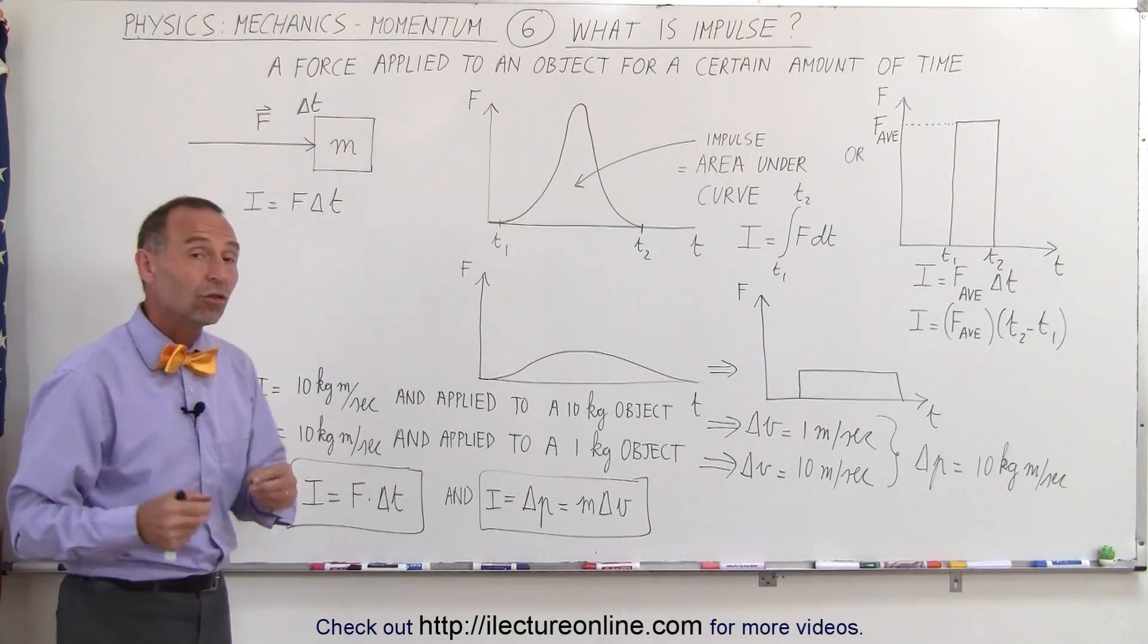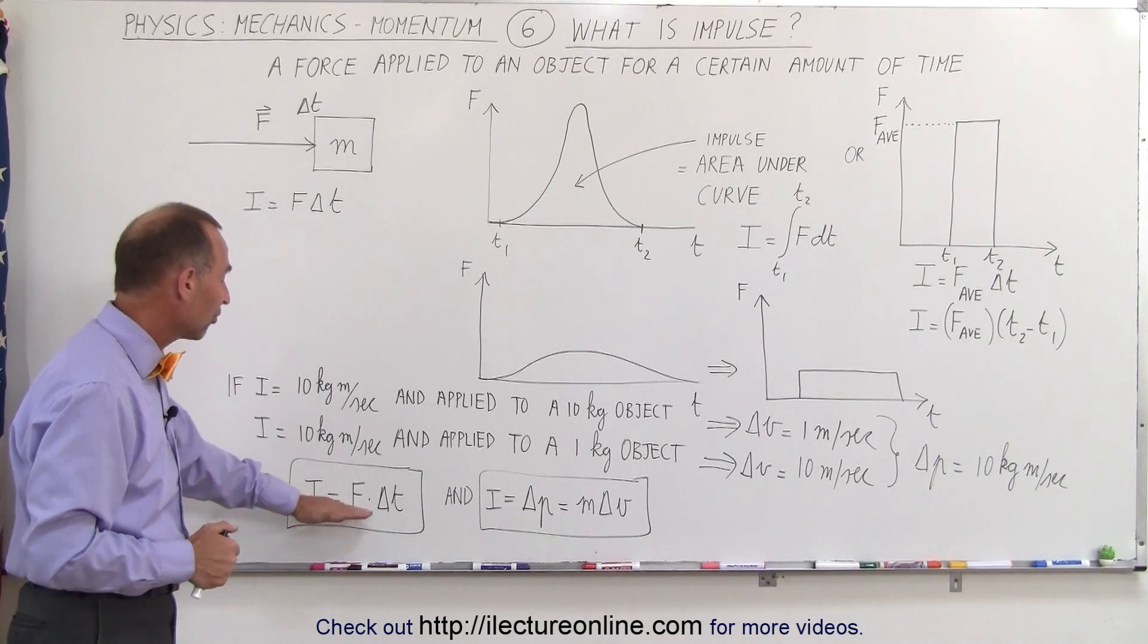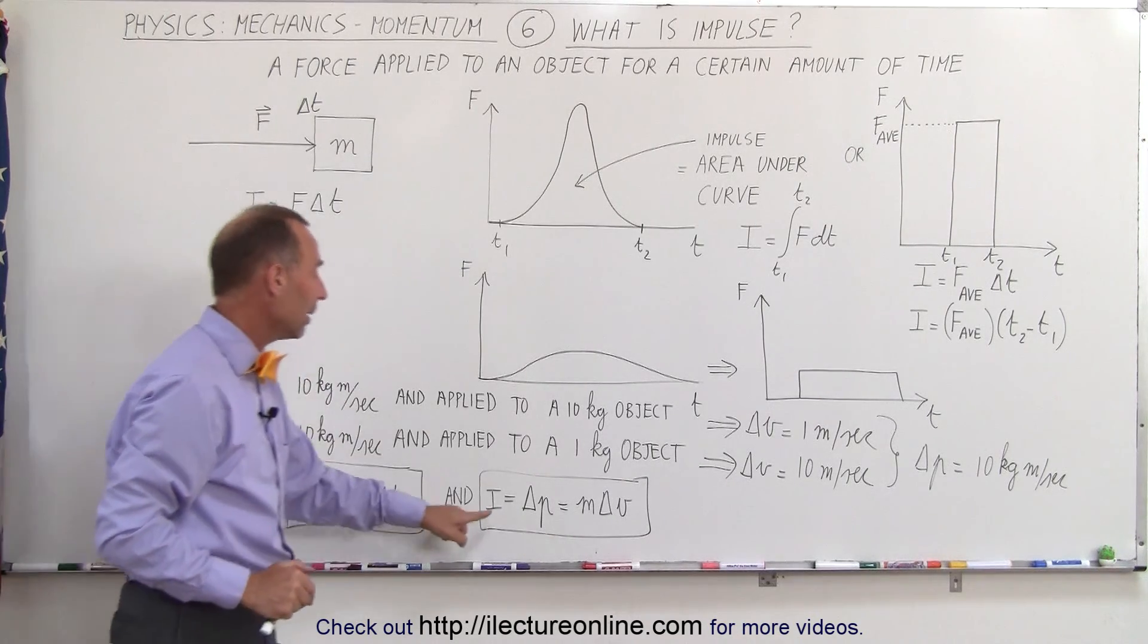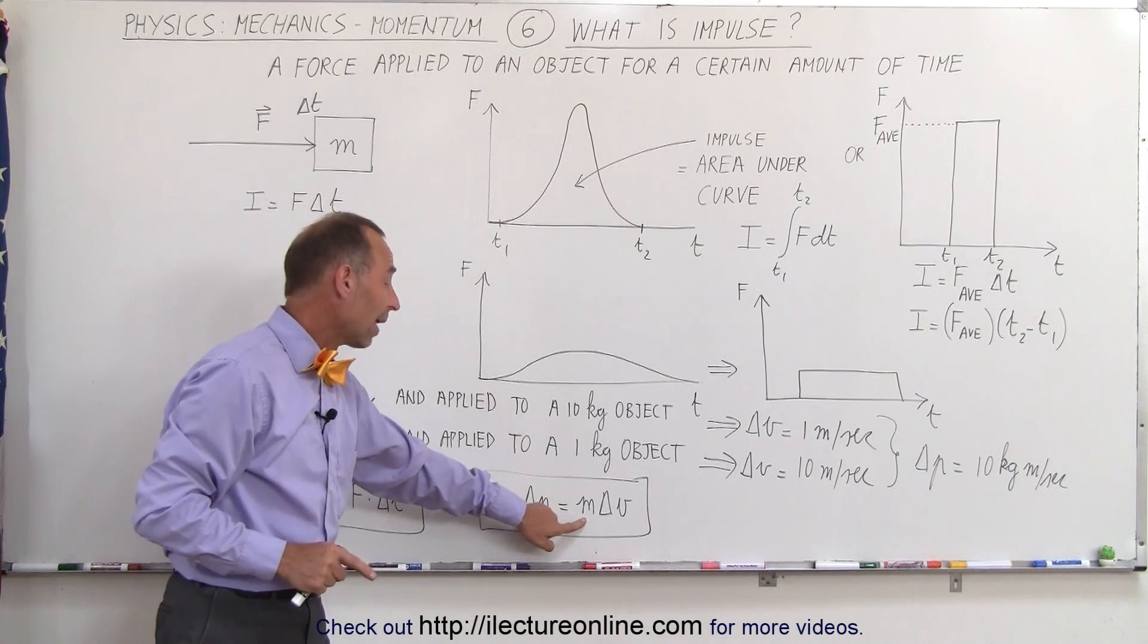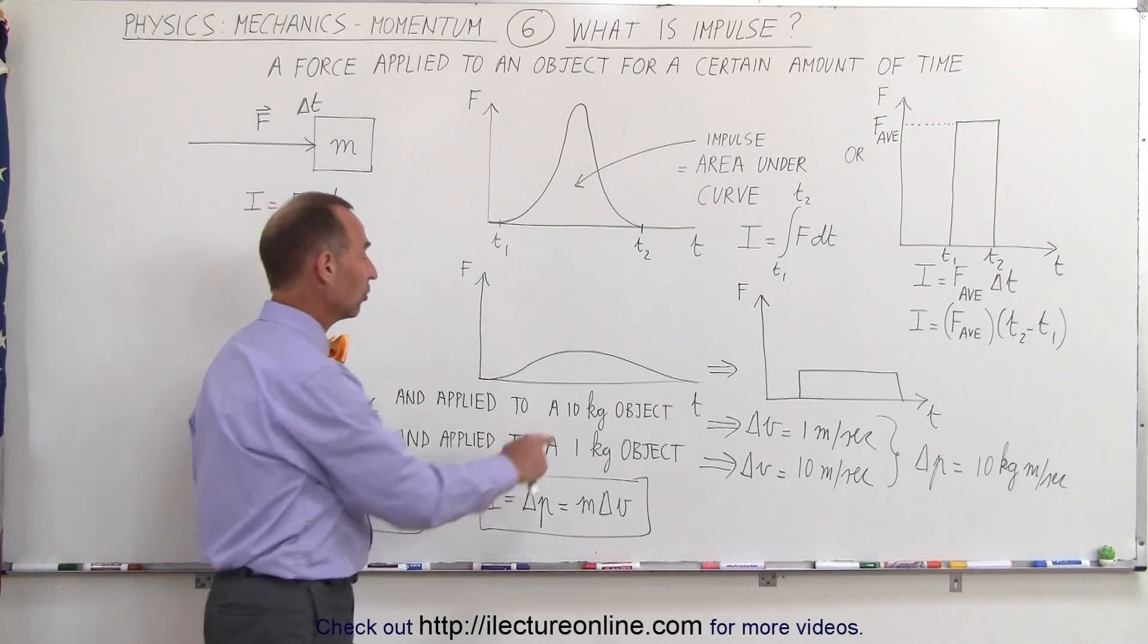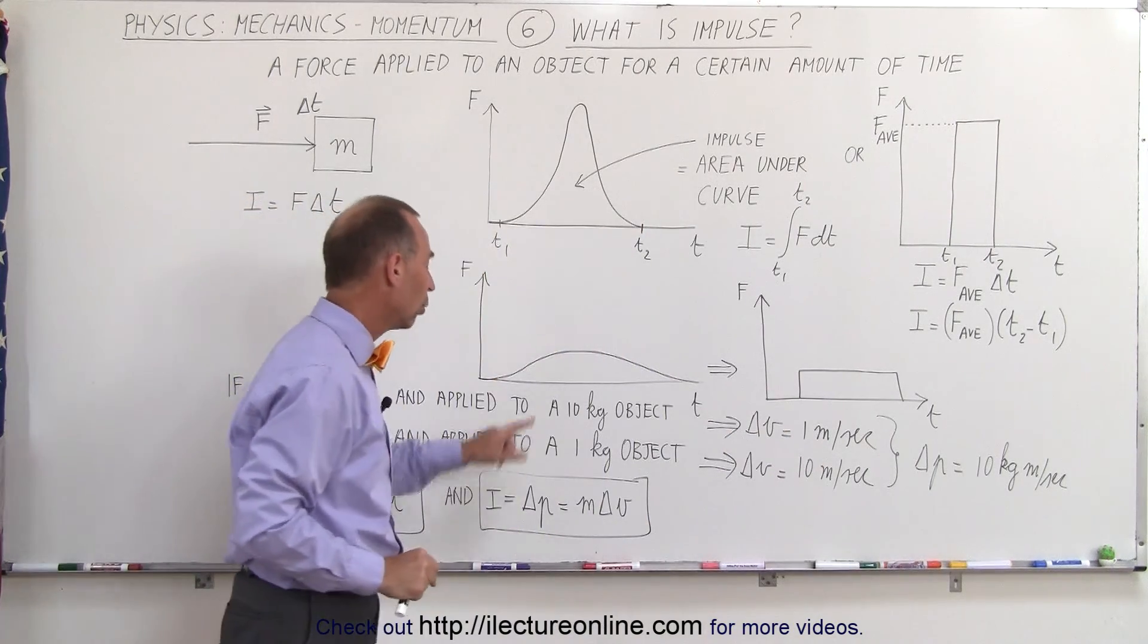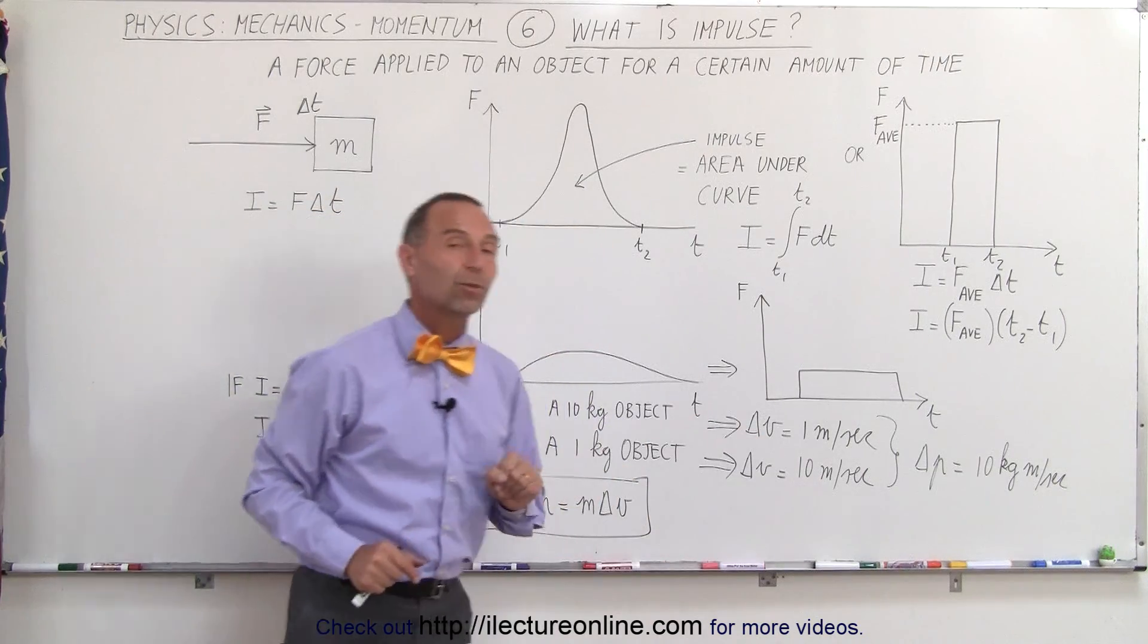So we can say here that an equation to describe impulse can be written as the impulse is equal to the force times the time, just like we saw before. Or we can say that the impulse is equal to the change in momentum, which is equal to the mass of the object times the change in velocity. So 10 kilograms times the change in velocity of 1 meter per second, or 1 kilogram times the change of 10 meters per second.